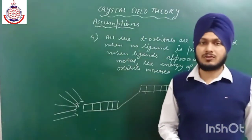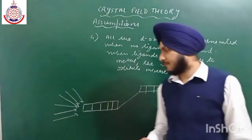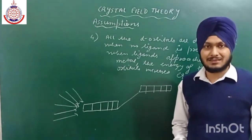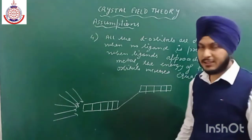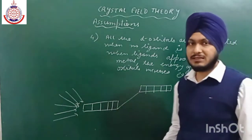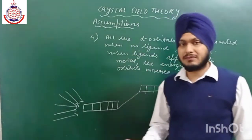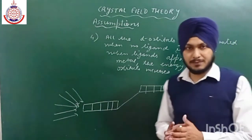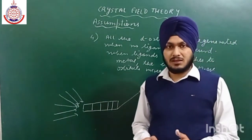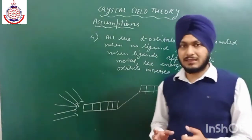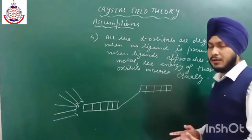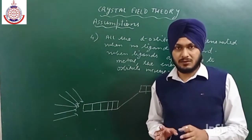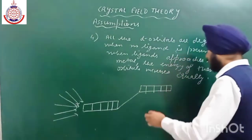When the ligands want to make a bond, as we know all d orbitals are oriented in different axes with different shapes: dxy, dyz, dzx, dz², dx²−y². Due to this different arrangement, when the ligands start bonding with the metal atom, the degeneracy is lost — the degeneracy breaks.